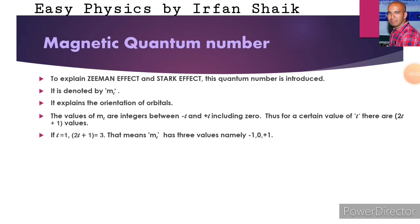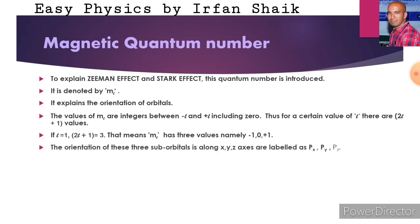If l is equal to 1, then 2l plus 1 becomes 3. That means ml has three values, namely minus 1, 0, and plus 1. The orientation of these three suborbitals is along the x, y, and z axes and these are labeled as px, py, and pz.